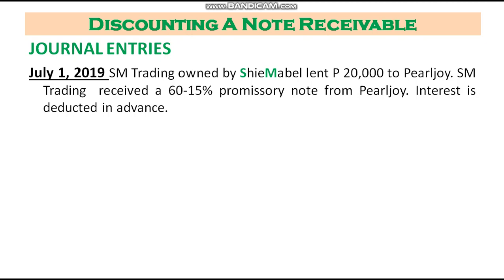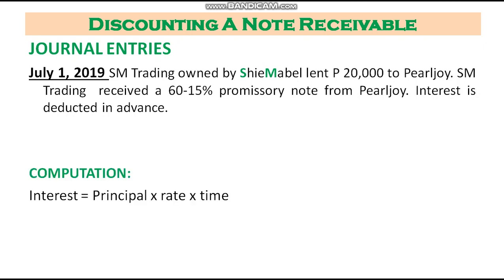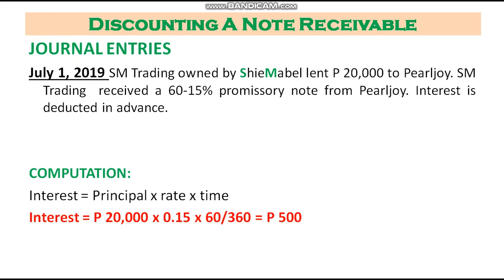Let us analyze the July 1, 2019 transaction. First, compute the interest: Principal × Rate × Time = 20,000 × 15% × (60/360). Time should always be expressed in years, so we divide by 360. Our interest is 500 pesos.